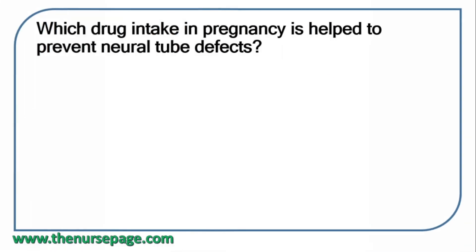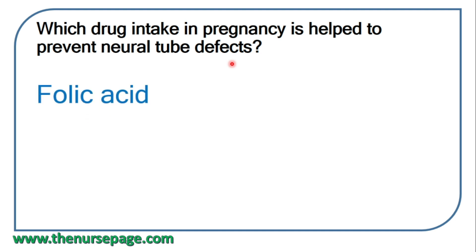Next question: which drug taken during pregnancy helps prevent neural tube defects? The correct answer is folic acid, 400 micrograms.